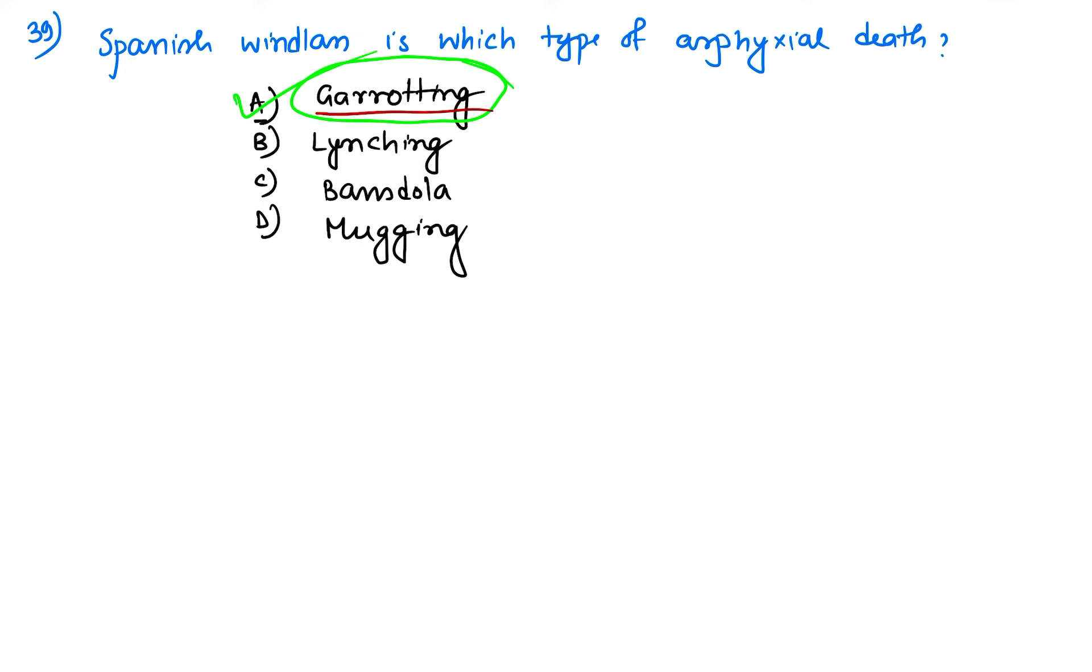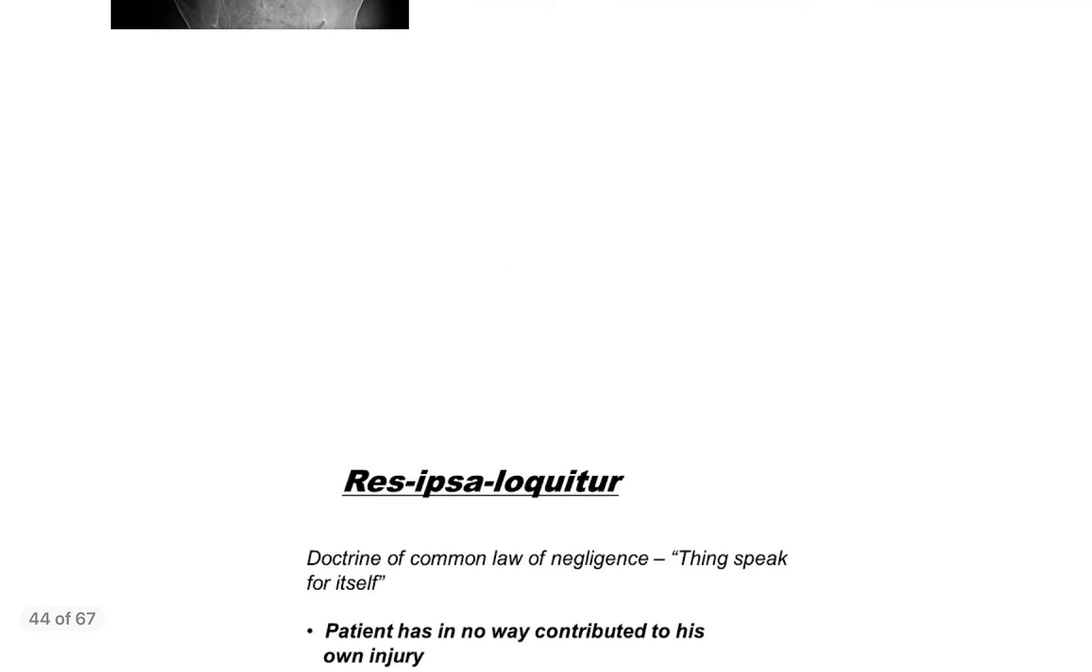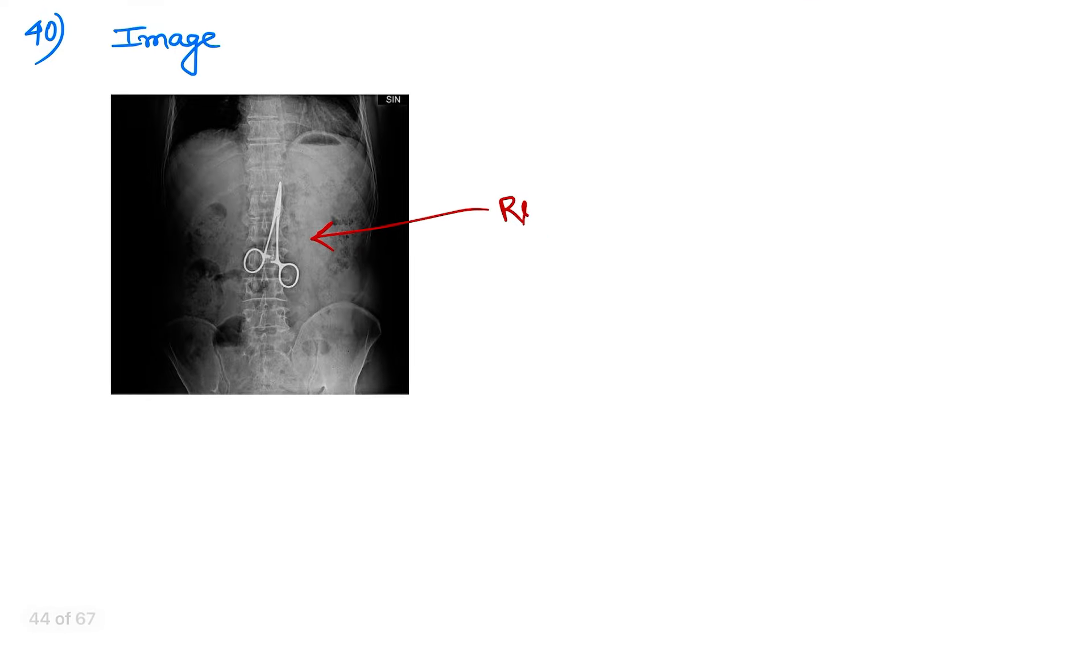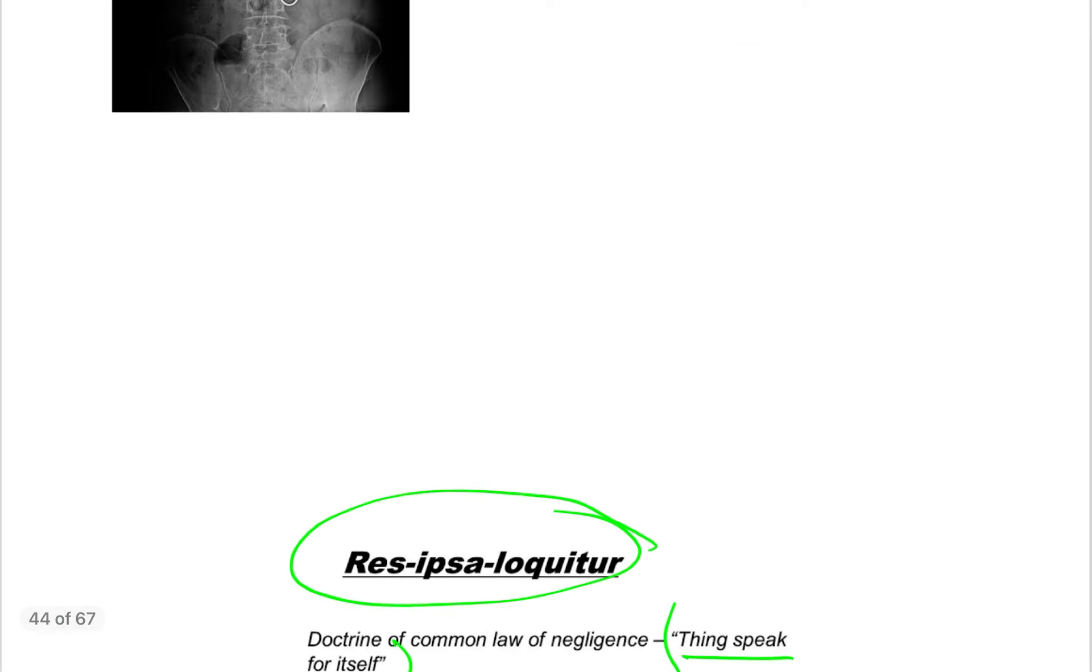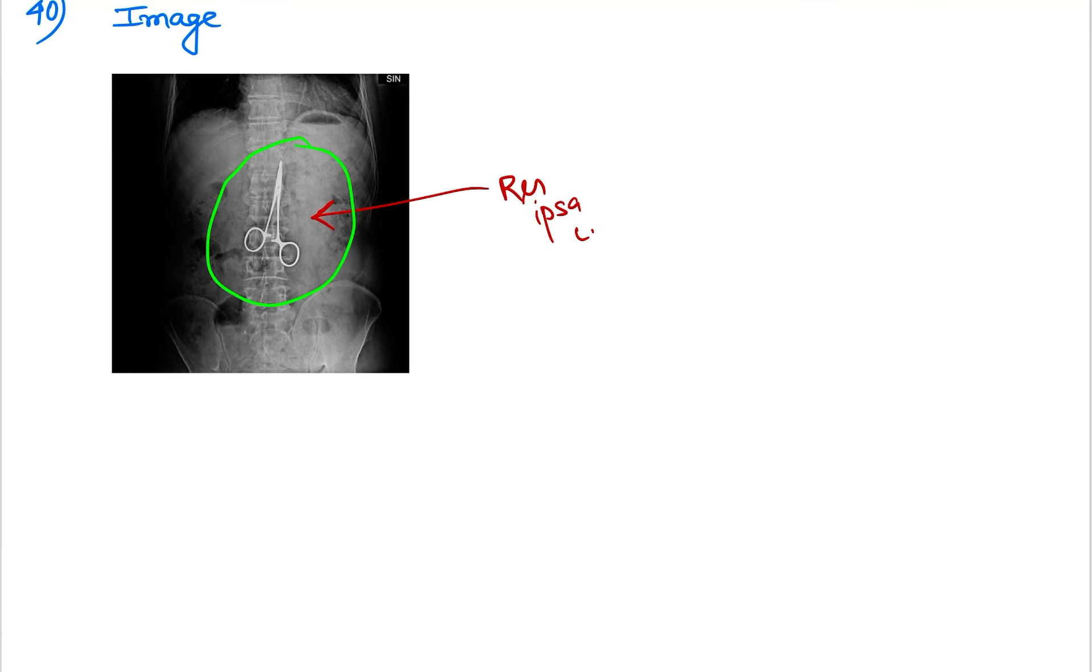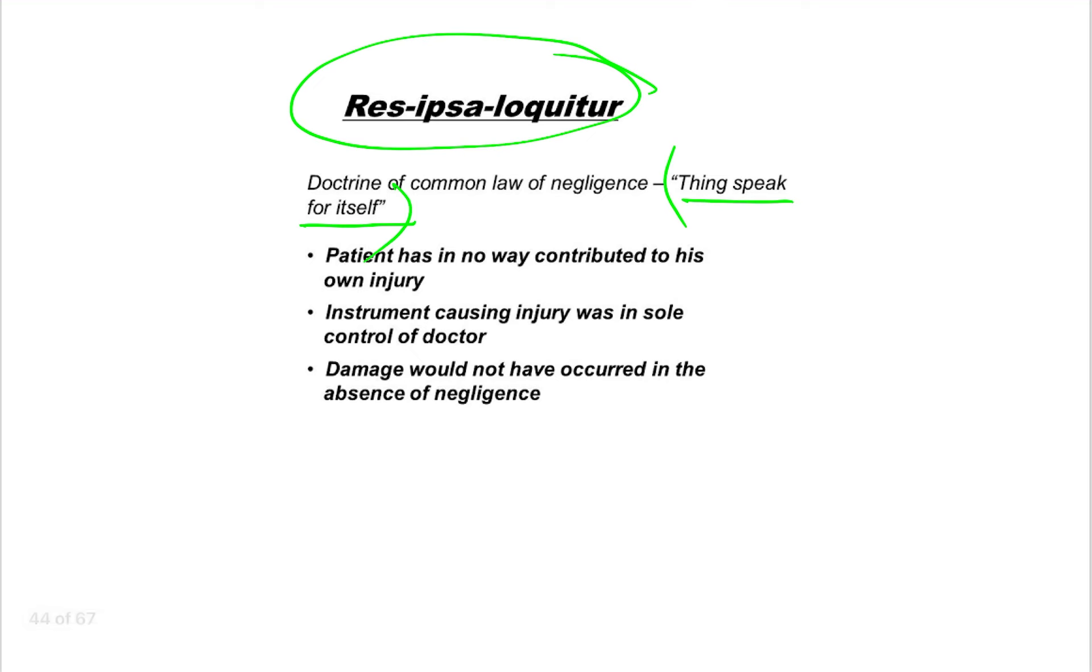This is an image of nothing but negligence, and the term is called res ipsa loquitur. As you can see, res ipsa loquitur - this actually means 'things speak for itself.' You can see here presence of a scissor inside the abdomen during operation. So this is about medical negligence where things speak for itself. Here, the patient has in no way contributed to this injury. The injury is caused in sole control of the doctor, and damage would not have occurred in the absence of negligence.